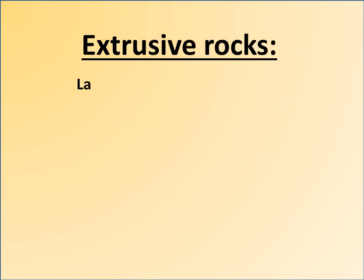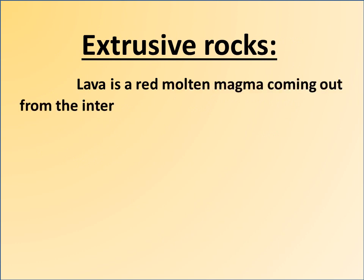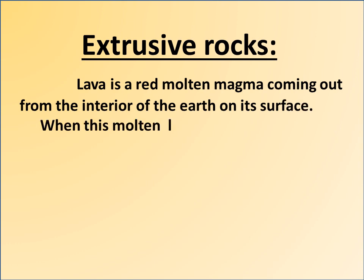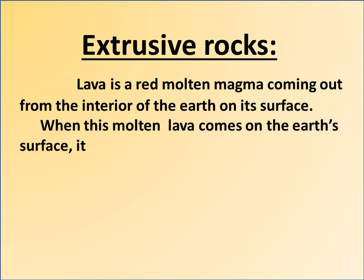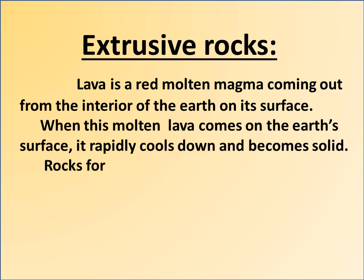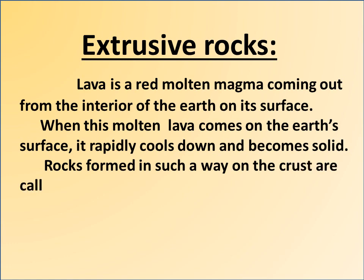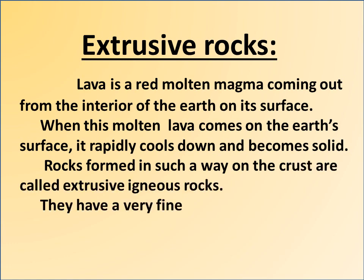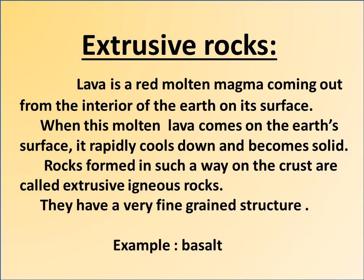Extrusive rocks: lava is red molten magma coming out from the interior of the earth onto its surface. When this molten lava comes on the earth's surface, it rapidly cools down and becomes solid. Rocks formed in this way are called extrusive igneous rocks. They have a very fine grain structure. Example: basalt.